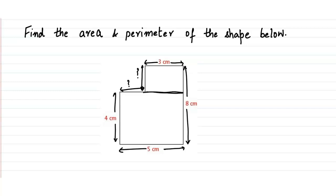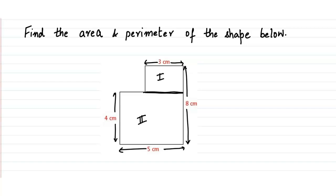When I draw the line over here, I get two rectangles — this is the first one and this is the second one. This is going to help me find the missing sides. One thing we need to remember is that opposite sides of a rectangle are equal.